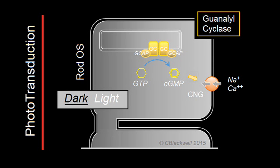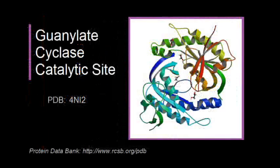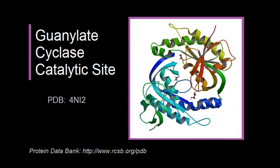In the dark, guanylate cyclase functions at a low level of activity, producing a baseline amount of cyclic GMP, thus setting the resting potential of the cell. Here is the crystal structure of guanylate cyclase.